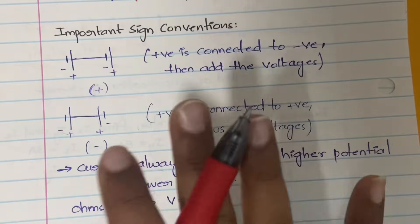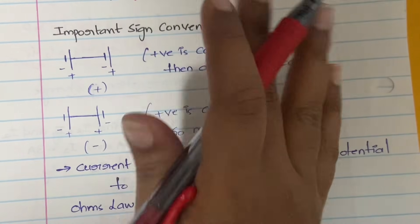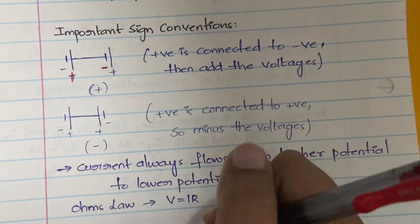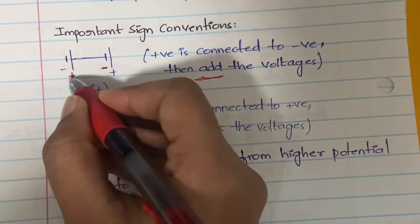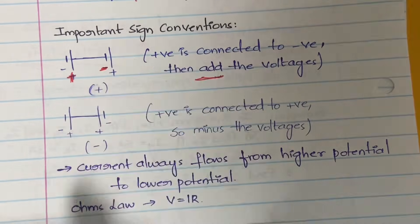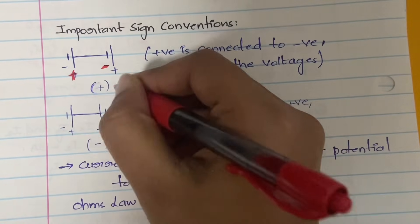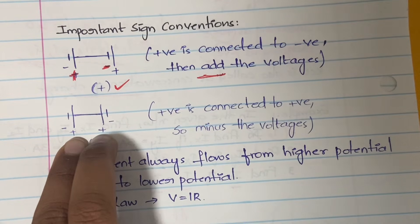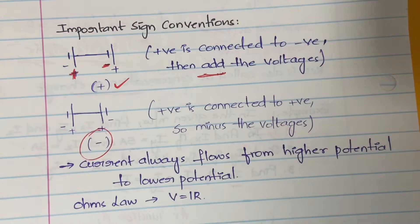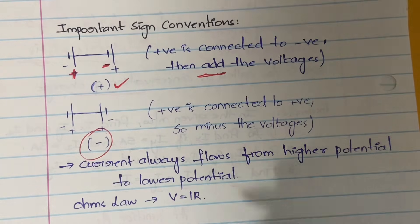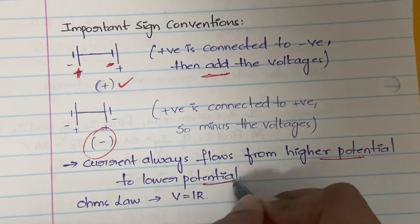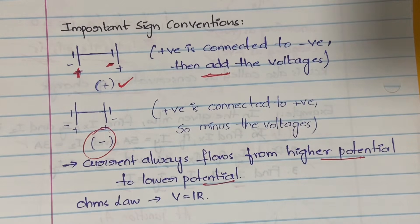Important sign conventions: if the positive terminal is connected to the negative terminal — that is, if opposite signs are connected — you add the voltages. If the same signs are connected to each other, you subtract the voltages. Also remember that current always flows from higher potential to lower potential.